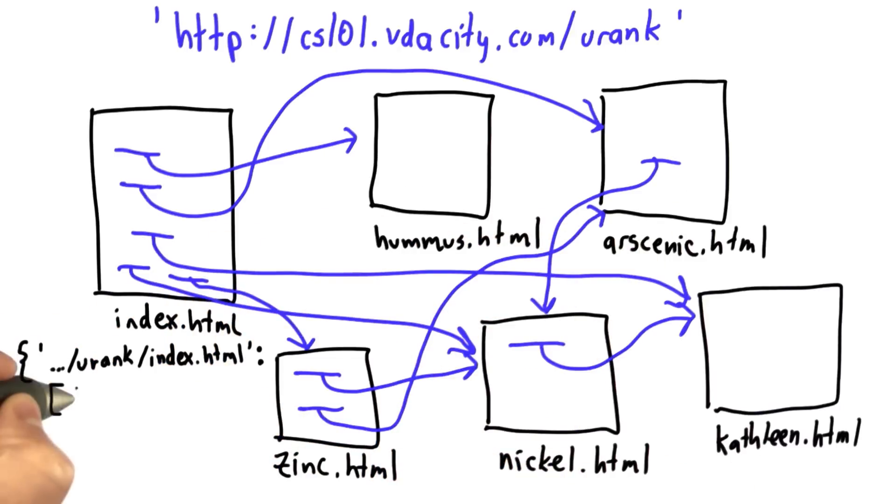All five of these should be in the list here. There should be the hummus page, there should be the arsenic page, and the other three pages. The order that links appear in this list doesn't matter. It's correct as long as you have all five of the links that you can reach from the index.html page.